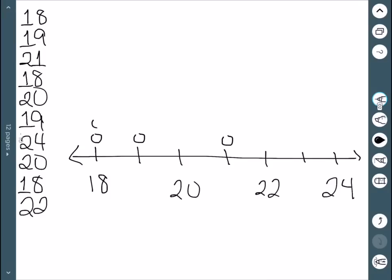Since we have a second 18, it goes directly above there. Here, we have a 20, another 19, a 24, another 20, another 18, and a 22. So this is our dot plot.